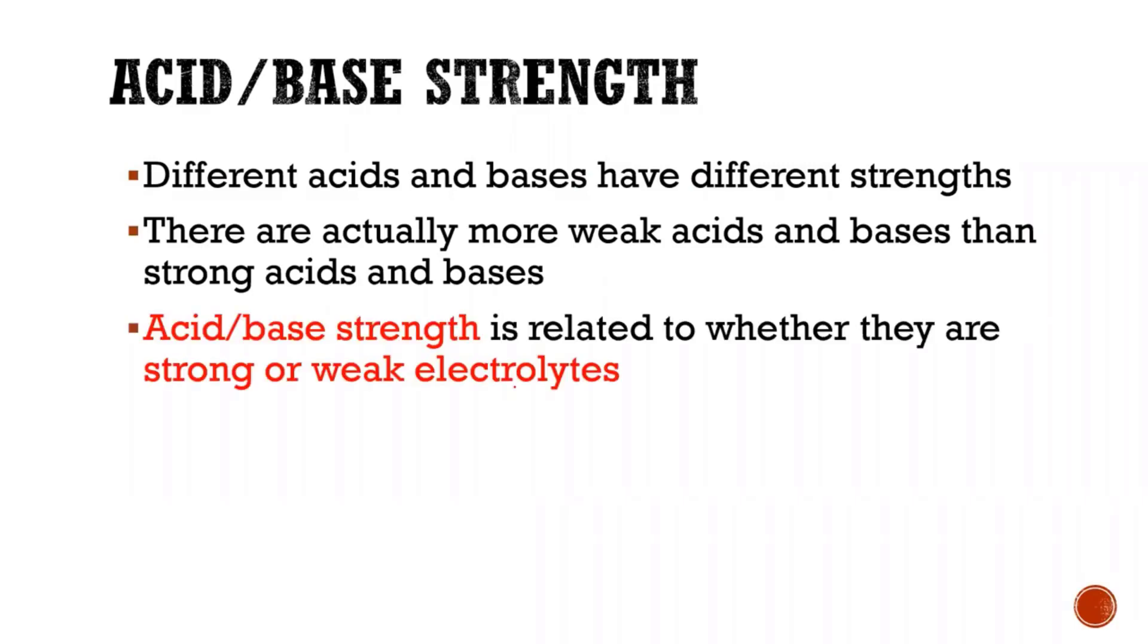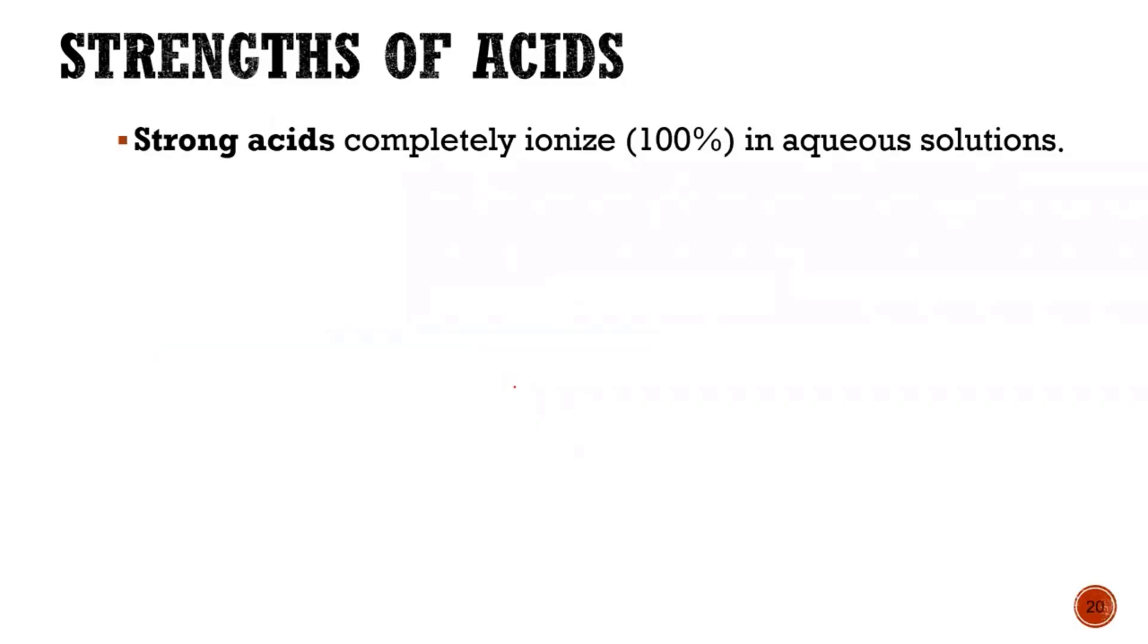So acid and base strength is related to whether or not it's a strong or weak electrolyte. Basically, does it dissociate 100% or only partially? So strong acids break apart 100%. If I take a strong acid, I throw it in water, it completely breaks apart into ions. So that's why we have the single arrow.